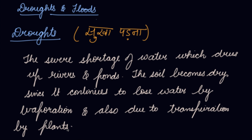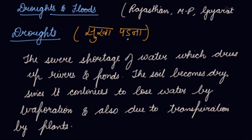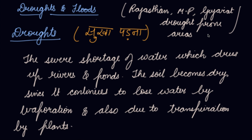In our country, some states like Rajasthan, Madhya Pradesh, and Gujarat are specially drought-prone areas, where there are high chances that they will suffer from the problem of drought.